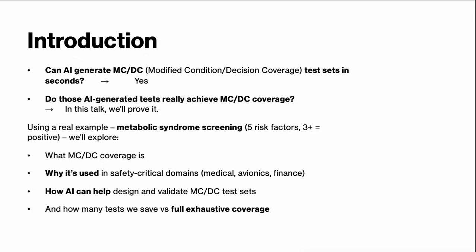A patient is considered positive for metabolic syndrome if they have three or more of these five risk factors. We use this to explain what MCDC actually is, why it's used in safety-critical systems, and how AI can help us design minimal test sets and compare them to full exhaustive coverage.